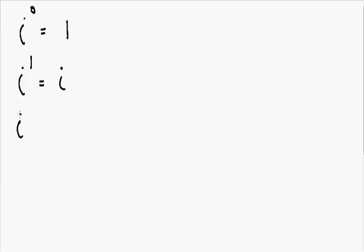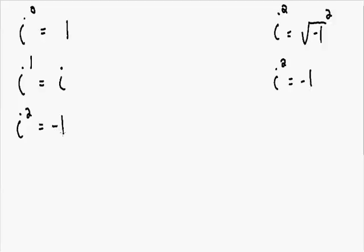Now let's say we have i to the second power — i squared. We know the value of i is equal to the square root of negative 1. If we square both sides of this equation, on the left hand side we have i squared, and on the right hand side the square and the square root cancel each other out, leaving us with negative 1. So i squared is equal to negative 1.